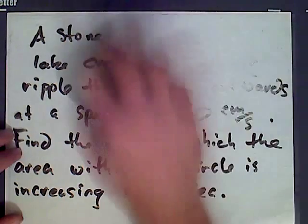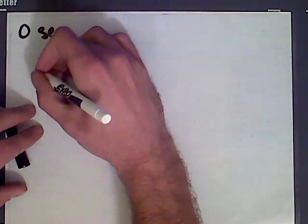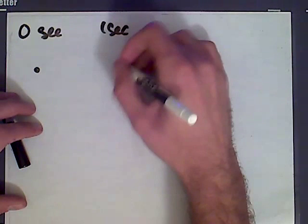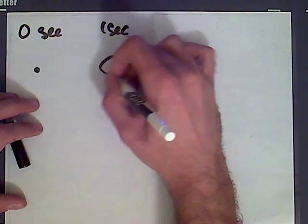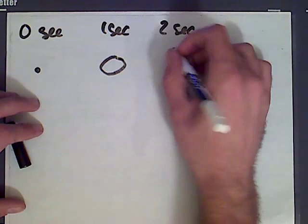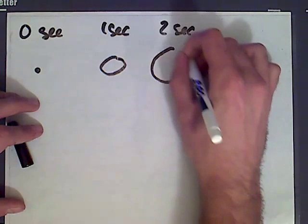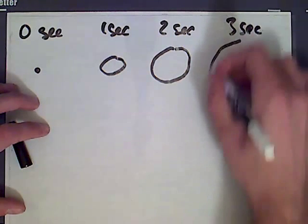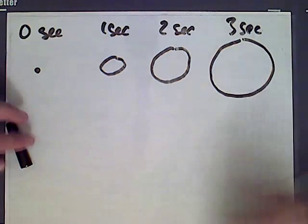So let me draw a picture. At zero seconds, the stone is dropped. At one second, there's a small circular ripple. At two seconds, it's going to be a little bigger. And then at three seconds, it's going to be bigger again.